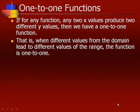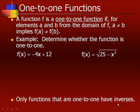One-to-one functions. If for any function, any two x values produce two different y values, then we have a one-to-one function. That is, when different values from the domain lead to different values of the range, the function is one to one. A function f is one to one if, for elements a and b from the domain of f, a ≠ b implies f(a) ≠ f(b). That means if you pick two different x values, you're going to get two different y values.